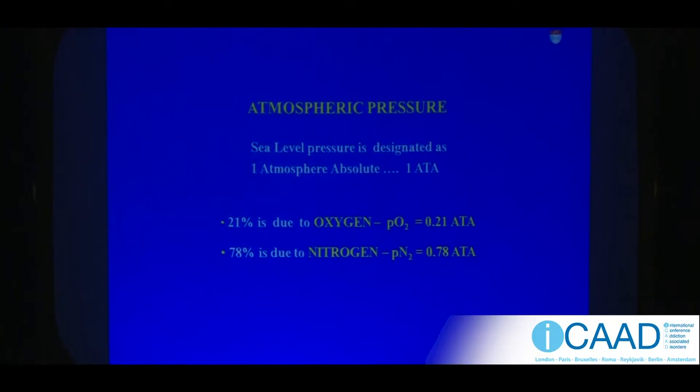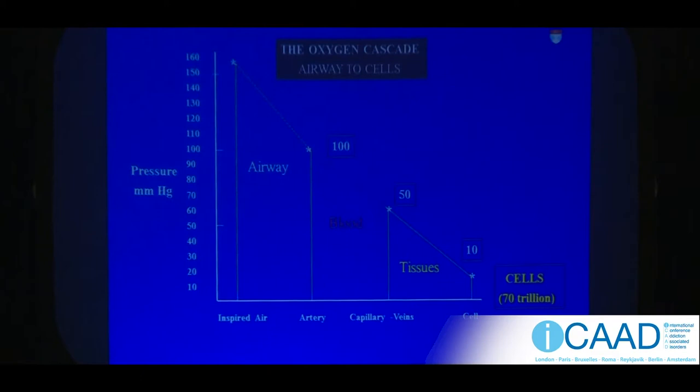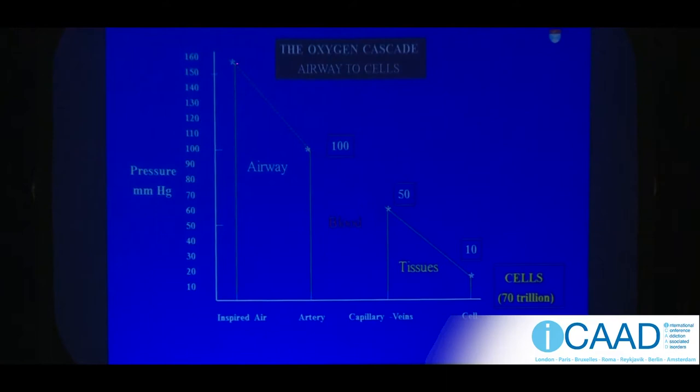At sea level, the pressure is designated as one atmosphere absolute — this is arbitrary. 21% of that pressure is exerted by oxygen and 78% by nitrogen. This is Dalton's law of partial pressures. Taking the air pressure in this room, it's about 160 millimetres of mercury, and what this slide shows is the drop that occurs in the airway and lungs, then the further drop in the blood going to the cells.